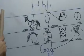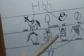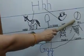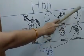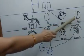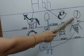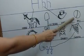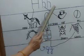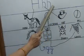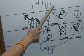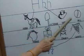Okay, look here — what is this? This is a ball. And what is the phonic sound of ball? That is B. No, this is H, H.